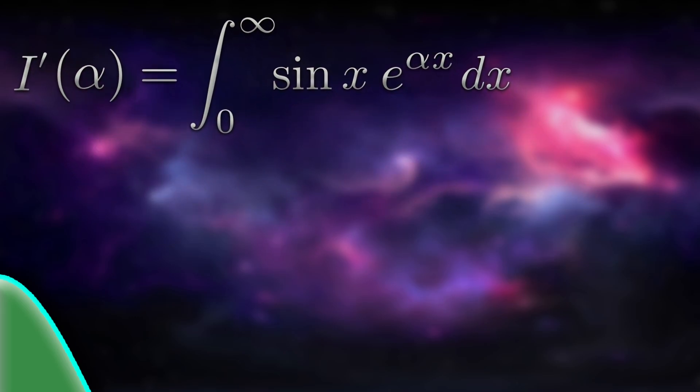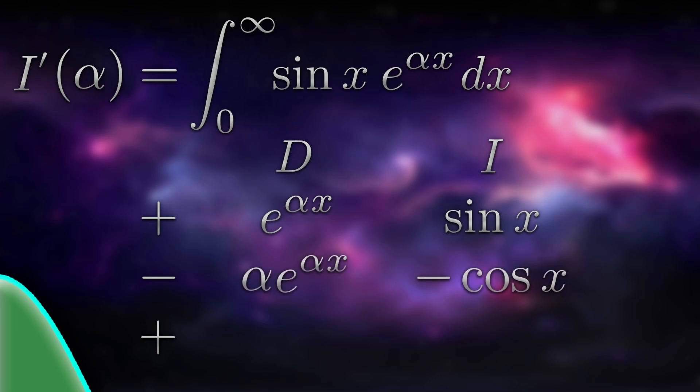We start with two columns, D and I. We choose which function to differentiate and write it in the D column. We then choose the other function to integrate and write it in the I column. In this case, it doesn't matter which way around you choose, both will get us to the right answer in the end. There's a third column on the left, with alternating plus and minus, which is because of how repeated integration by parts works. We differentiate the D column and integrate the I column, and check if we know how to integrate the new row. The new row we have here is negative alpha e to the alpha x times negative cos x, which is alpha cos x e to the alpha x. We don't know how to integrate this, so keep going.